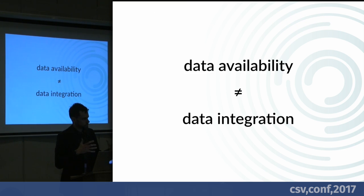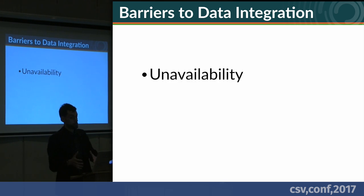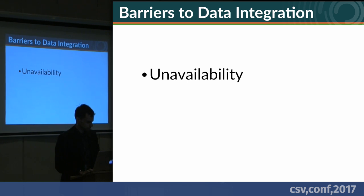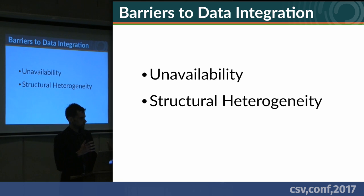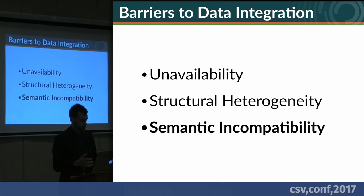Just because data is available doesn't mean that it's integrable. The barriers to data integration include: needing to have stuff in the same place — a problem largely solved with the data sharing boom; needing information in the same structure, meaning file format and aggregation level; and then needing the same thing described in the same language. Semantic incompatibility is a big sticking point.